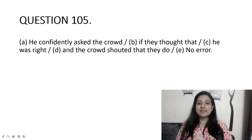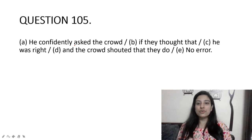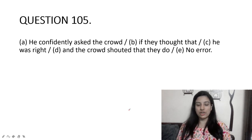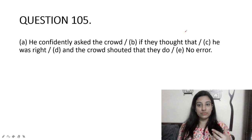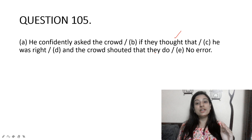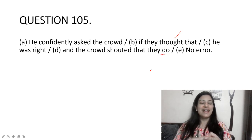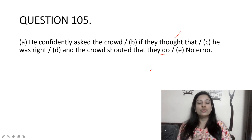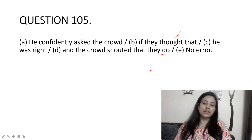He confidently asked the crowd if they thought that he was right, and the crowd shouted that they do. The sentence is in past tense throughout — he asked, the crowd shouted — so you cannot use the present form 'do' at the end. It must be the past form: 'that they did.'